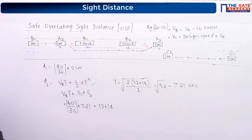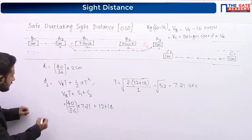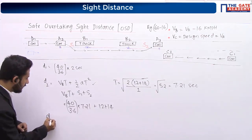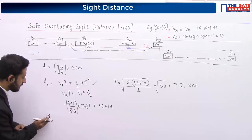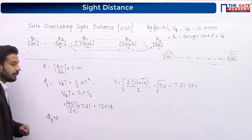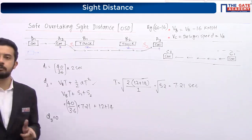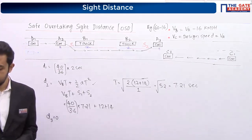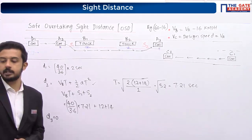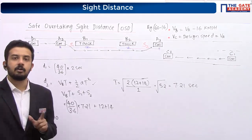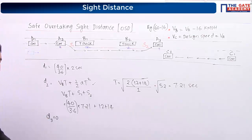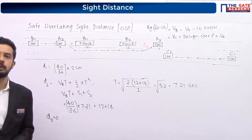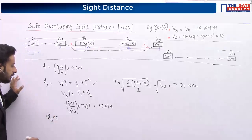What about d3? How much is d3? d3 will be equal to 0. You have to note that down, because it is given that it is a two-lane one-way road. So whether you write it or not, note it down: d3 equals 0.